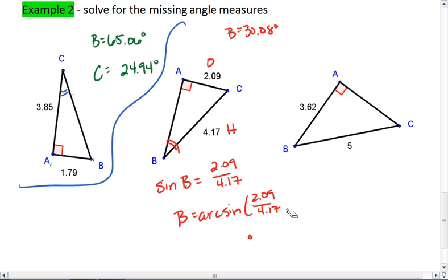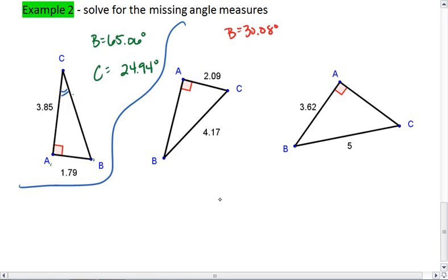If B is 30.08 degrees, and A is 90 degrees, then C, which is this angle here, must be 90 minus 30.08. C is 59.92 degrees.